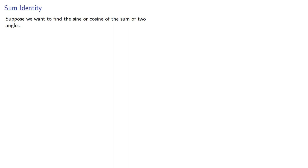Suppose we want to find the sine or cosine of the sum of two angles. To begin with, suppose we can draw the right triangles with angles phi and theta and place them in a rectangle as shown.